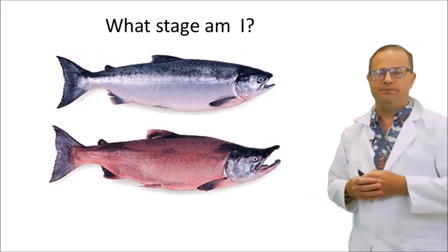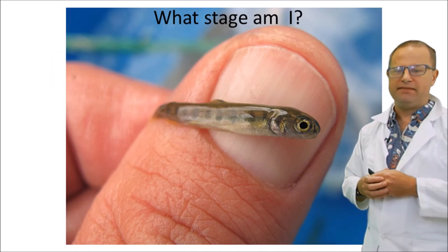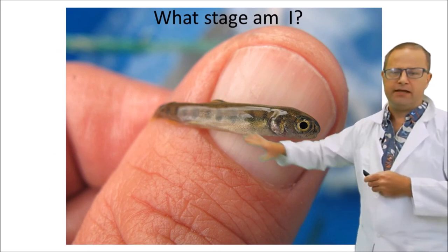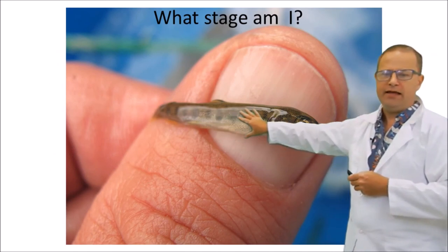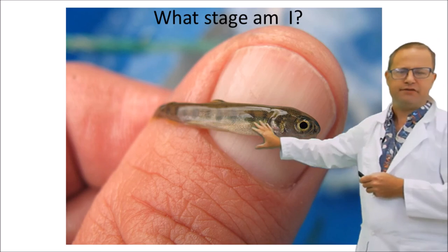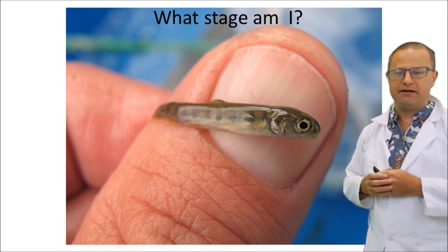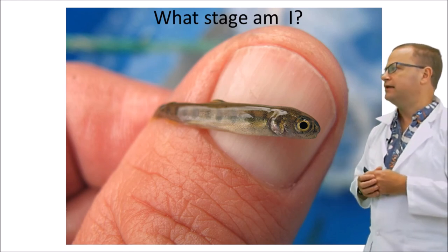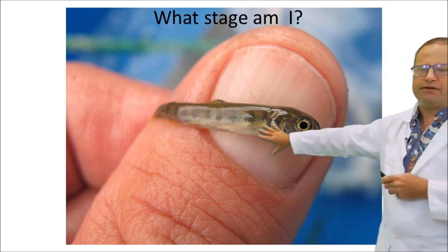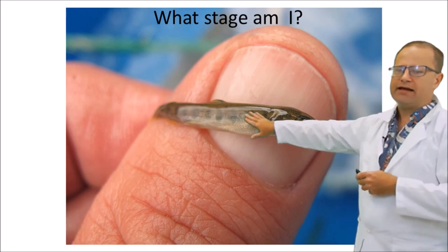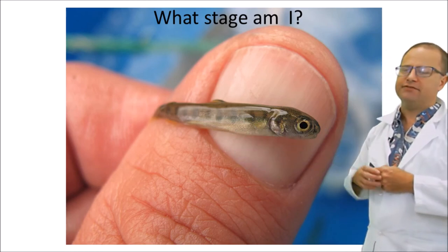Okay, what about this? These are adults, right? We've got the hook-nose male and the female right there. And what about this? This guy right here is very, very small, it's not even the size of a finger yet, so it's not a fingerling. We're going to probably say that it is a fry because it does not have a yolk sac. So not having a yolk sac makes it a fry.